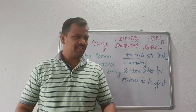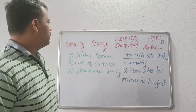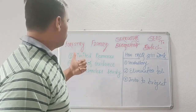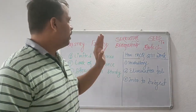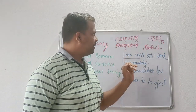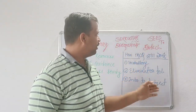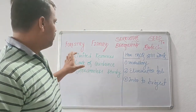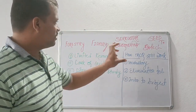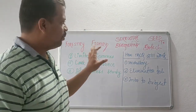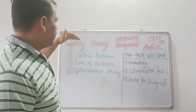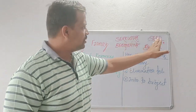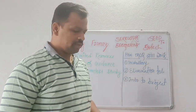Hello everyone, welcome to Shidditch Career. Today we will talk about six subjects summarized into four broad categories: forestry, fishery, sericulture, beekeeping, seed technology and biotechnology.